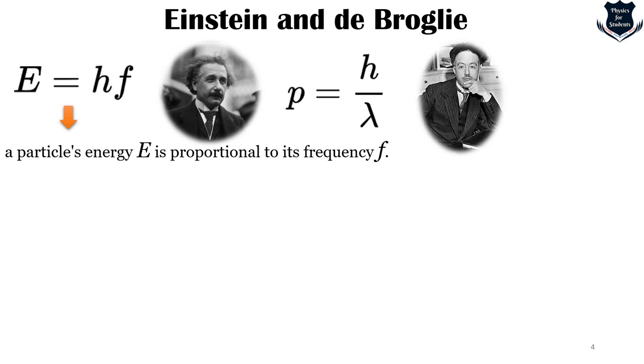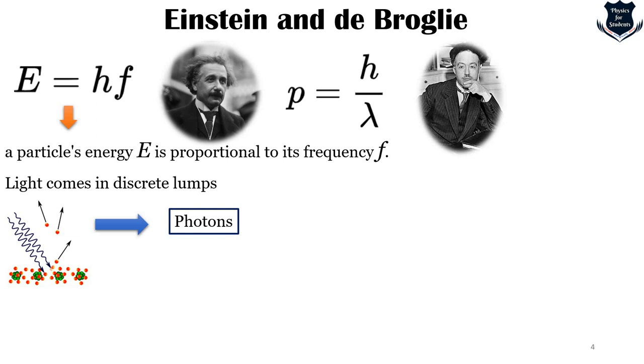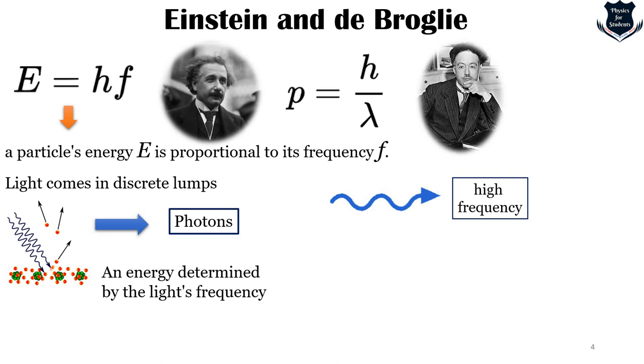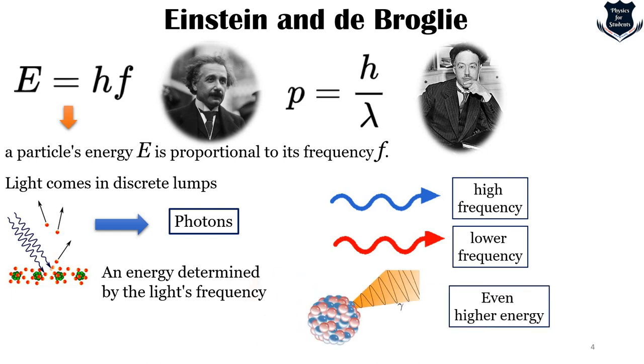Einstein's E equals HF says that a particle's energy E is proportional to the frequency F. In 1905, Albert Einstein proposed a relation for light introducing the radical idea that light comes in discrete lumps called photons, each with an energy determined by the light's frequency. A blue photon which has a higher frequency has more energy than a red photon which has a lower frequency, while a gamma ray photon has far more energy compared to either, and a radio wave photon has much less.